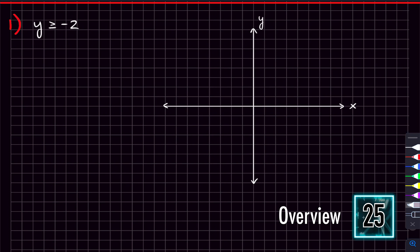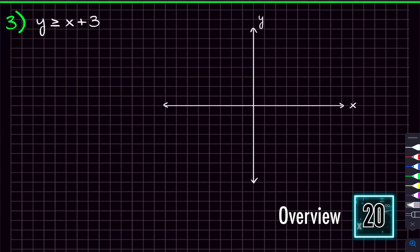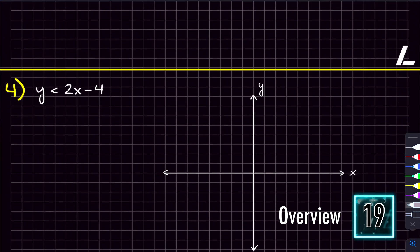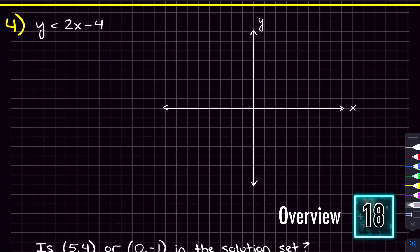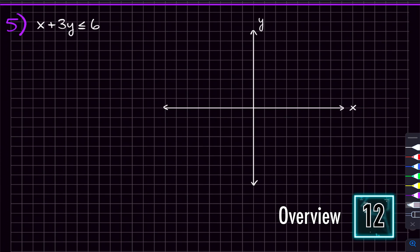By the end of this video, you're going to be graphing linear inequalities like they're nothing. And in about 30 seconds, here's how this video is going to get you there. We're going to be graphing five linear inequalities, and these problems are just going to get harder and harder as we go. And eventually, we'll talk about points being in or outside of something called the solution set.